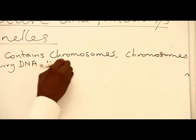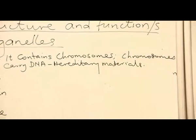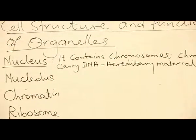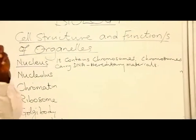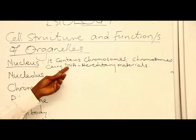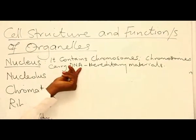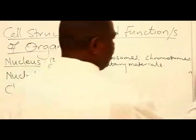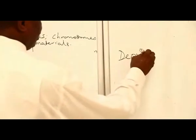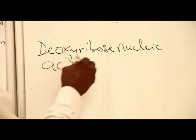Chromosomes carry DNA — hereditary materials. The DNA detects the type of protein the body will produce. In other words, it detects the character of an individual which is inherited from the parents. The characters we inherit from our parents are coded in this DNA — Deoxyribose Nucleic Acid — that is the meaning of DNA.